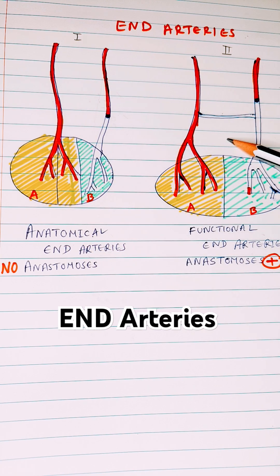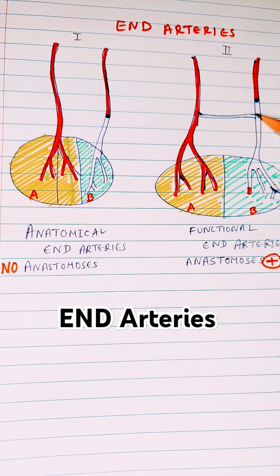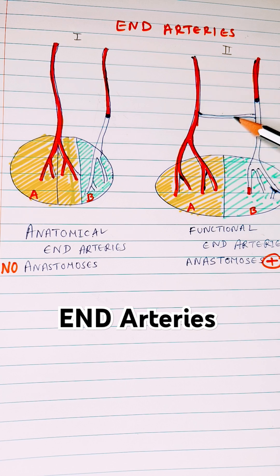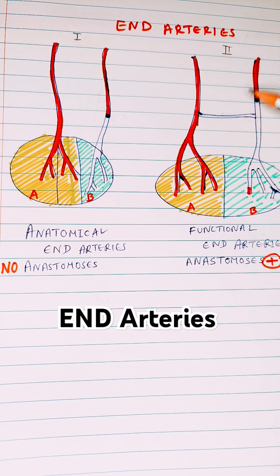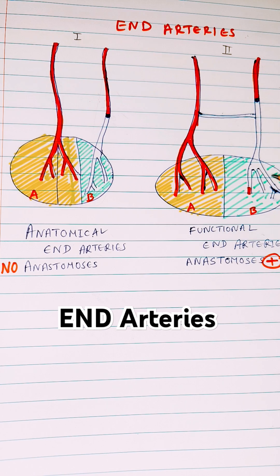Looking at functional end arteries in this diagram, two vessels are connected by a very thin collateral. Functional end arteries have a tiny collateral, but it only opens during a blockage. Normally, when both blood vessels are working fine, this vessel supplies section A and this supplies section B, with no overlap — that's why we call them functional end arteries.